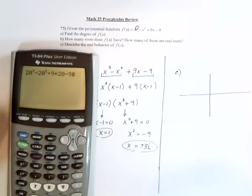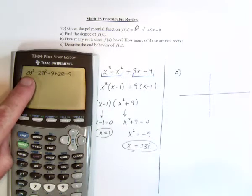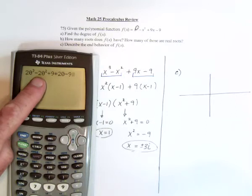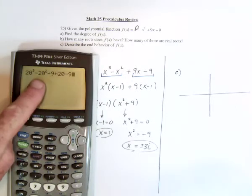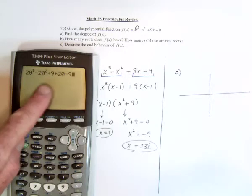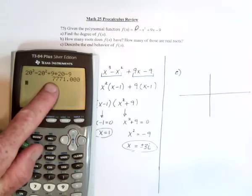Well, if you look at these numbers, 20 cubed is huge. 20 squared is 400. So, this, which is something like 8,000 minus 400 plus 180 minus 9. The numbers are just getting smaller and smaller and smaller.